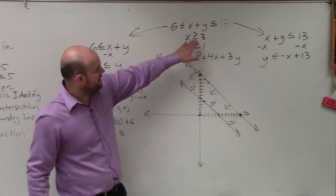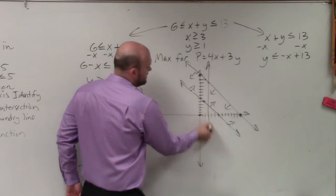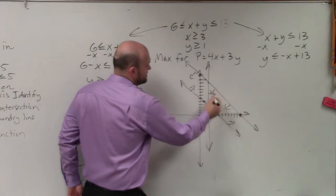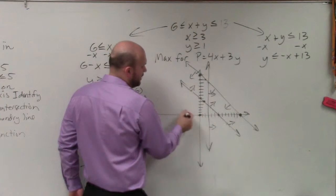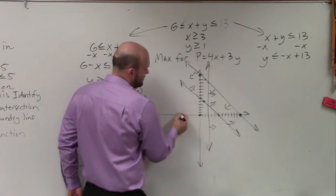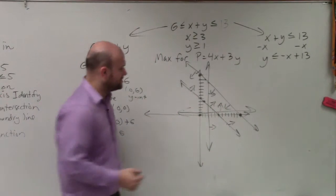Then we have to graph the line x is greater than 3: 1, 2, 3. So that's a vertical line. x is greater than is going to be going to here. And y is greater than 1 is a horizontal line at 1. So you guys can see there's this feasible region.